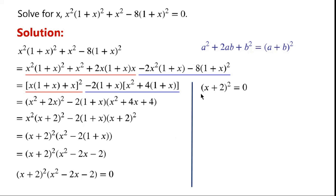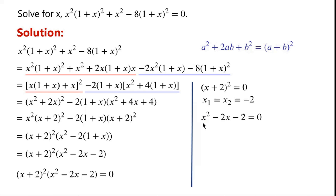So either (x plus 2) squared times x squared equals 0, giving x equals negative 2 as a repeated root, or x squared minus 2 times (1 plus x) equals 0. Applying the quadratic formula: x equals 2 plus or minus the square root of 4 plus 8, all over 2.